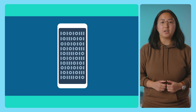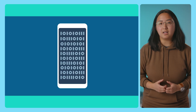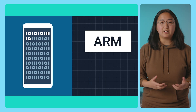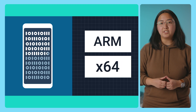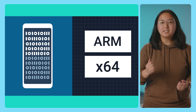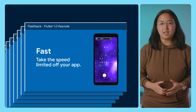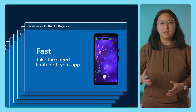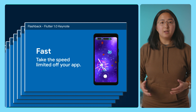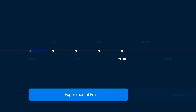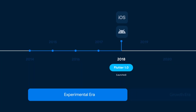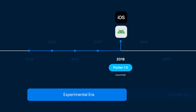In Flutter's experimental era, we made two foundational choices related to performance. First, we bet on Dart, which came with an ahead-of-time compiler enabling Flutter apps to compile to native ARM or X64 machine code. The result? Consistently fast app startup times. Second, we bypassed native UI kits and brought our own rendering layer, leveraging the power of device hardware by talking directly to the GPU. That result? Fast rendering and smooth animations across our two stable platforms at the time, iOS and Android.